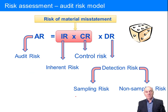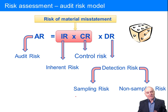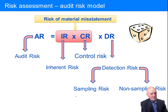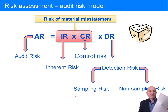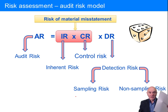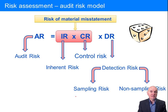And this audit risk model is what you really need to be thinking about. At the top we have something which is called the risk of material misstatement. What you have to imagine is that you go in to do the audit, and your client will present you with a set of draft accounts — financial statements that you haven't done any work on yet, which you're going to be examining. This risk of material misstatement is talking about the risk that these draft financial statements have within them a material misstatement.